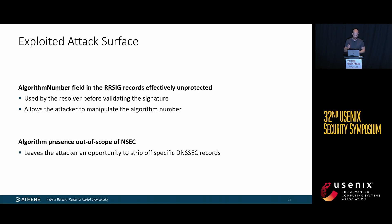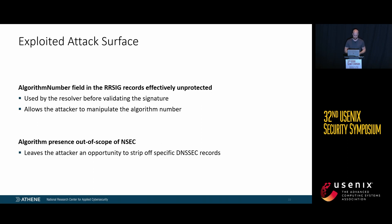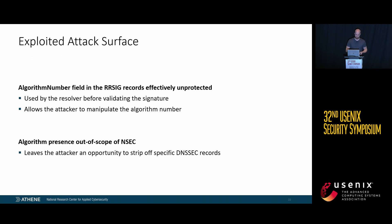Regarding specification: the algorithm number field in the RRSIG records is effectively unprotected, because it is used by the resolver before validating the signature. This allows the attacker to manipulate the algorithm number. Additionally, algorithm presence is out of scope of NSEC and its variations. NSEC is the authenticated denial-of-existence mechanism in DNSSEC, meant to prevent attackers from simply removing records. However, algorithm-presence granularity does not apply, leaving the attacker an opportunity to strip off specific DNSSEC records.